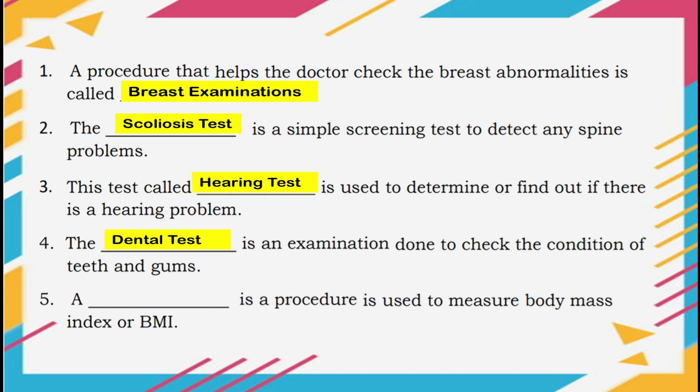Number 5: A blank is a procedure used to measure Body Mass Index or BMI. The answer is height and weight.